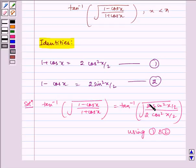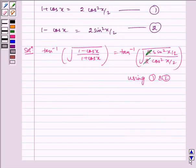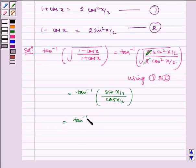Now this 2 gets cancelled. So we are left with tan inverse of sin x by 2 divided by cos x by 2, which is equal to tan inverse of tan x by 2, which is equal to x by 2 where x is less than pi.